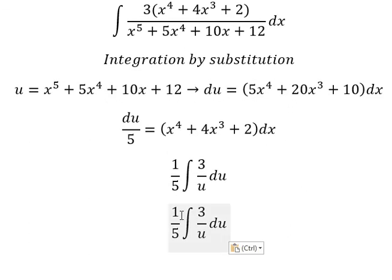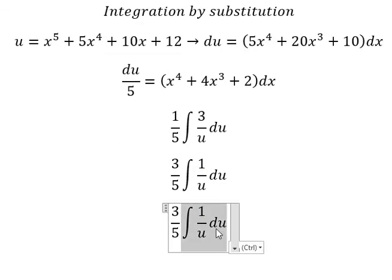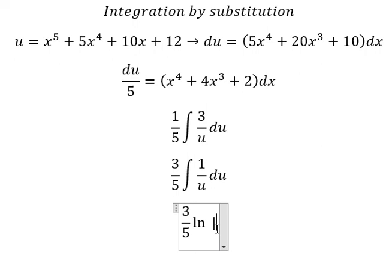So we put number three in here. The integration of this one, we have 3/5 ln of the absolute value of u plus C.